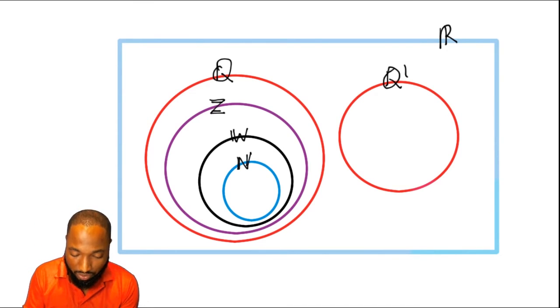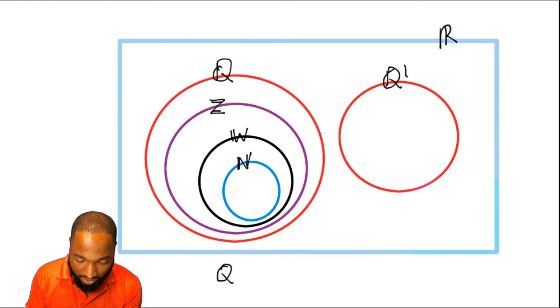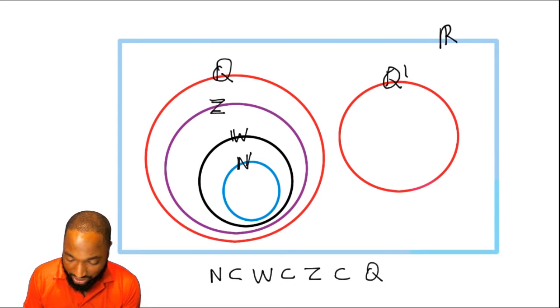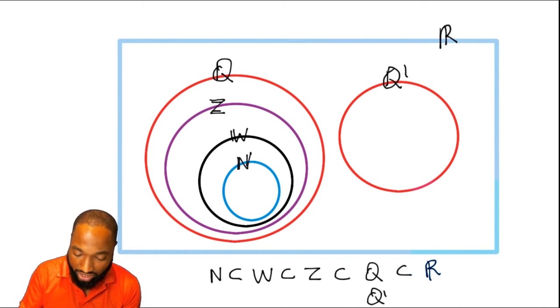And in word form we could say N is a subset of W is a subset of Z is a subset of Q, which is a subset of real numbers. But you know, the irrational numbers don't get to join this party. They don't get to join that Congo line.